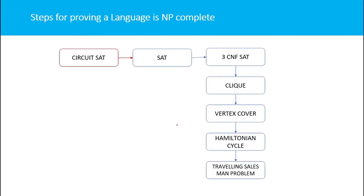Here is a map of our objective: to prove the Traveling Salesman Problem is NP-complete. Circuit Satisfiability is the first known NP-complete problem. We reduce SAT to Circuit-SAT, then 3CNF-SAT to Circuit-SAT, then Clique to 3CNF-SAT, then Vertex Cover to Clique, then Hamiltonian Cycle to Vertex Cover, and finally TSP to Hamiltonian Cycle — each reduction happening in polynomial time.